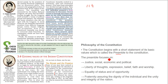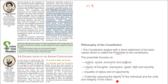The preamble is like the gist or summary of what is inside the constitution. The preamble focuses on justice — social, economic and political justice. Then the liberty of thought, expression, belief, faith and worship. And equality of status, equality of opportunity, and also fraternity assuring the dignity of the individual and the unity and integration of the nation.